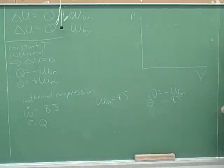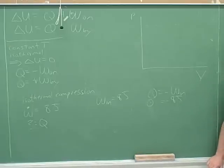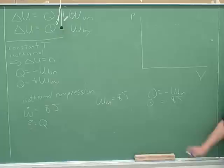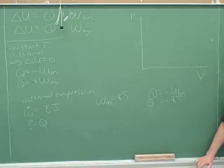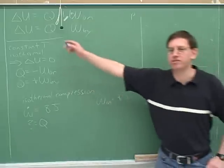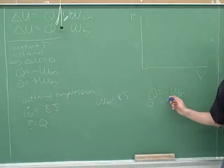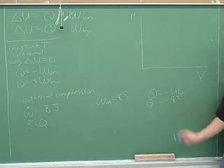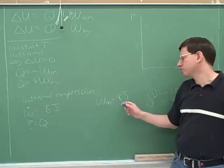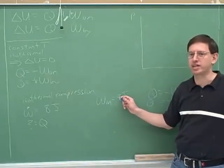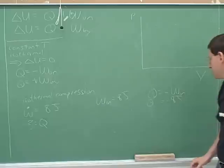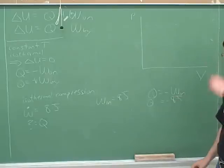How would you interpret that negative 8? What does that tell us about what's happening? 8 joules of heat is being removed. So does that mean the temperature is going up or going down? There's no change — that's right, we avoided the trap. We know there's no change because it's isothermal. Heat is not the same thing as temperature. We're removing 8 joules of heat, but we're also adding 8 joules of energy from the work, so those two things cancel and there's no change in temperature.